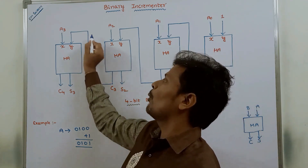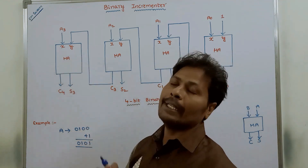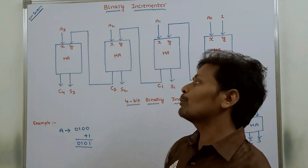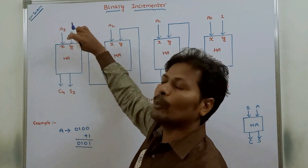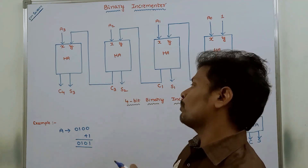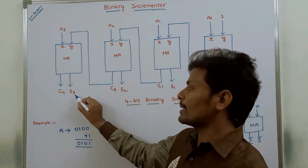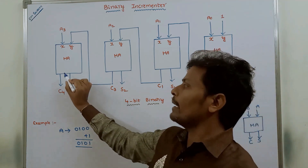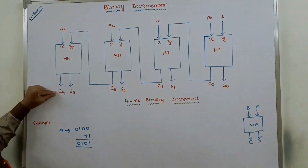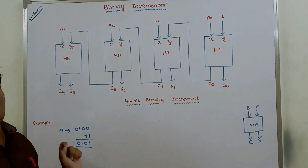C3 can be given as one of the inputs of the next higher half adder. That half adder takes two inputs: A3 at the X input and the carry output of the previous half adder at the Y input. It produces two outputs: sum output S3 and carry output C4. So C4 is the final carry output, and S3, S2, S1, S0 are the final sum outputs.